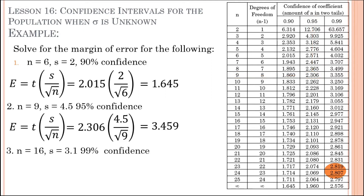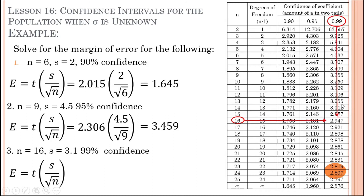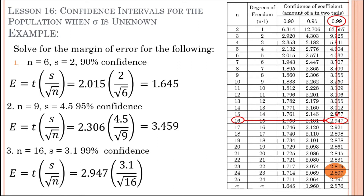Next, n equals 16, S equals 3.1, at 99% confidence. Find n equals 16 and 99% — the intersection gives a t-value of 2.947. Multiply by 3.1, divide by the square root of 16. The margin of error is 2.284.